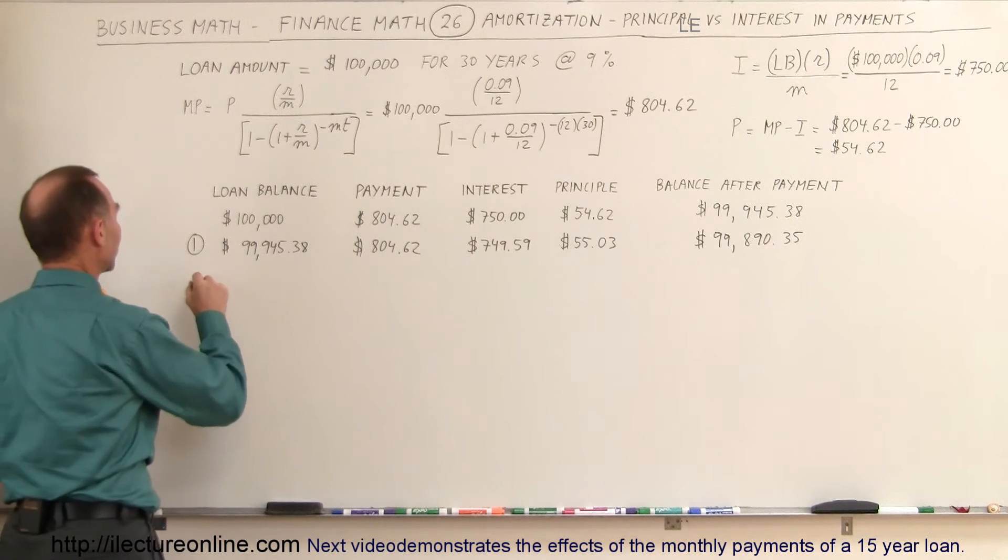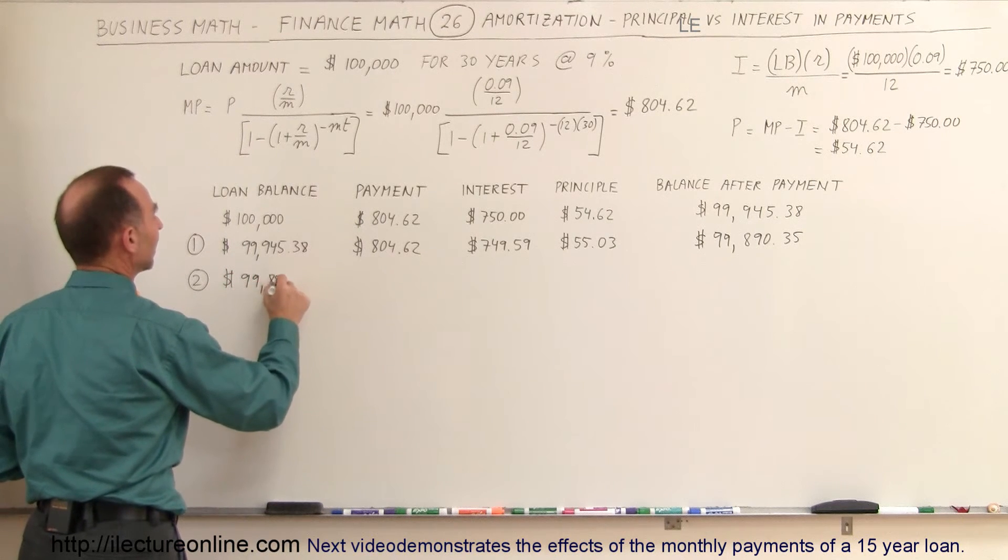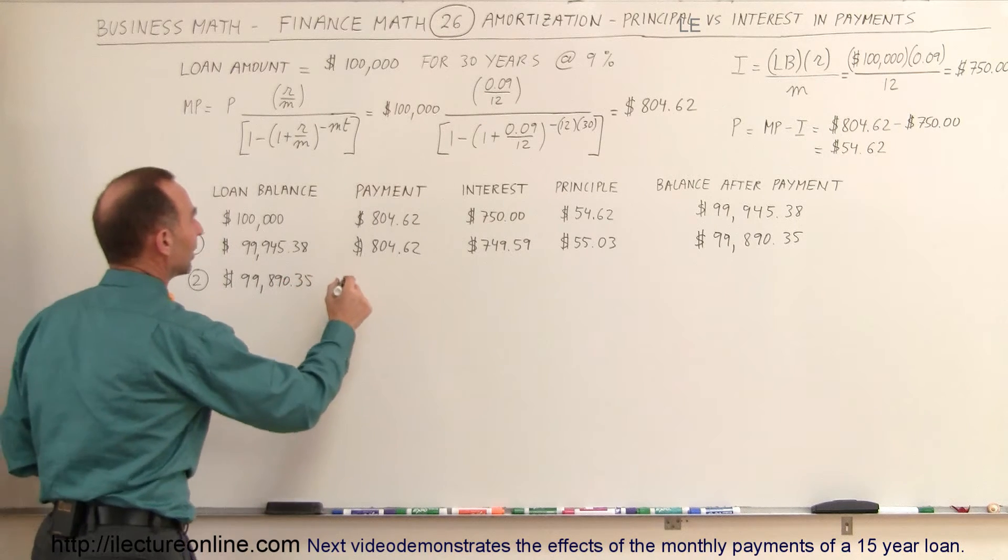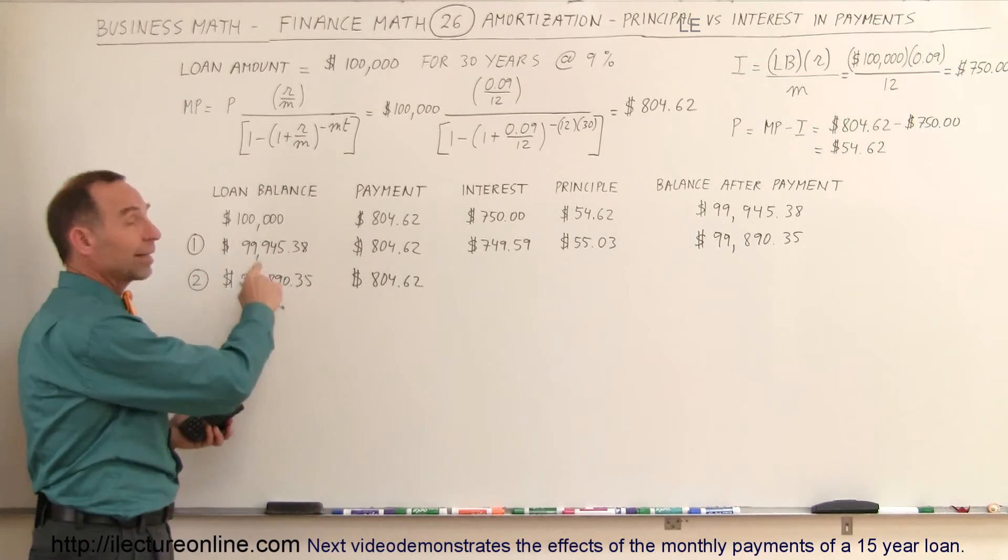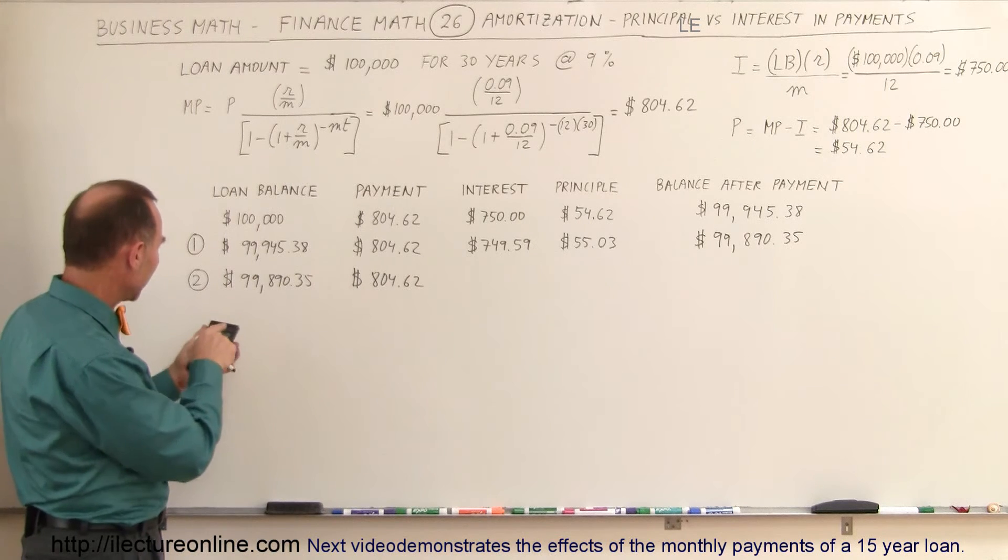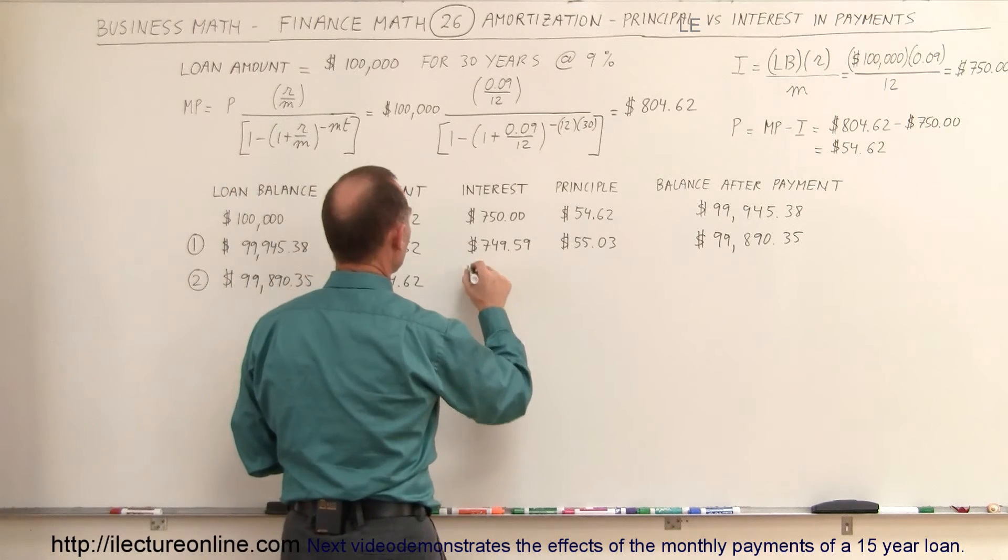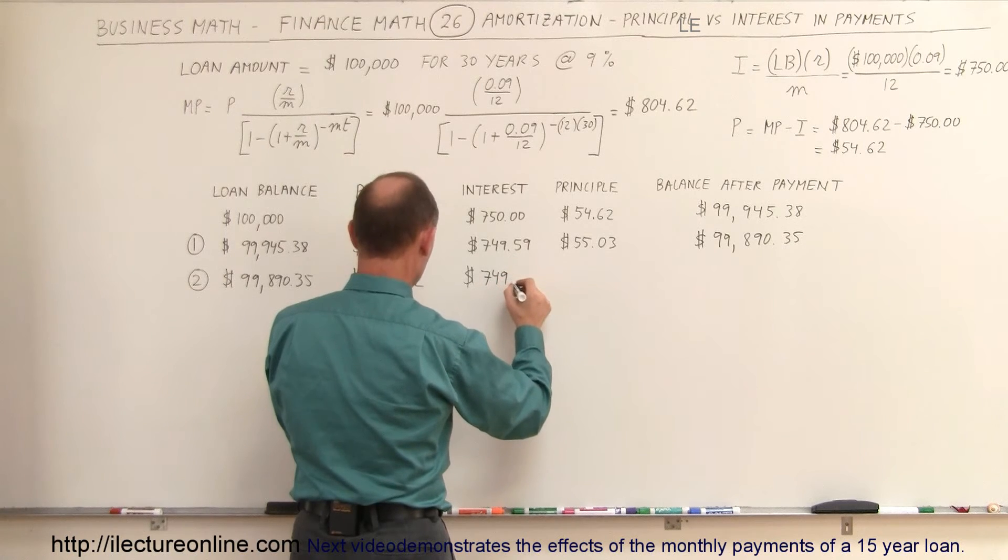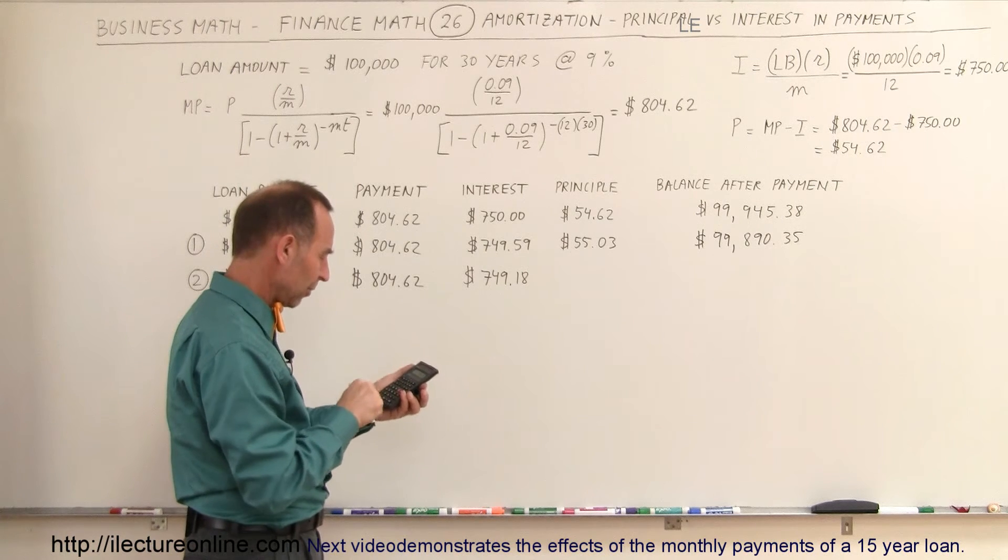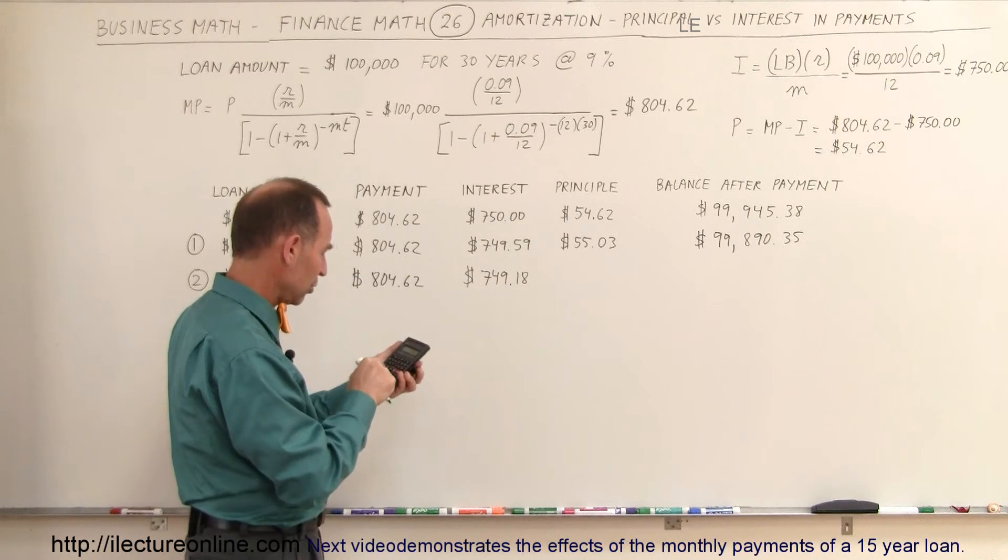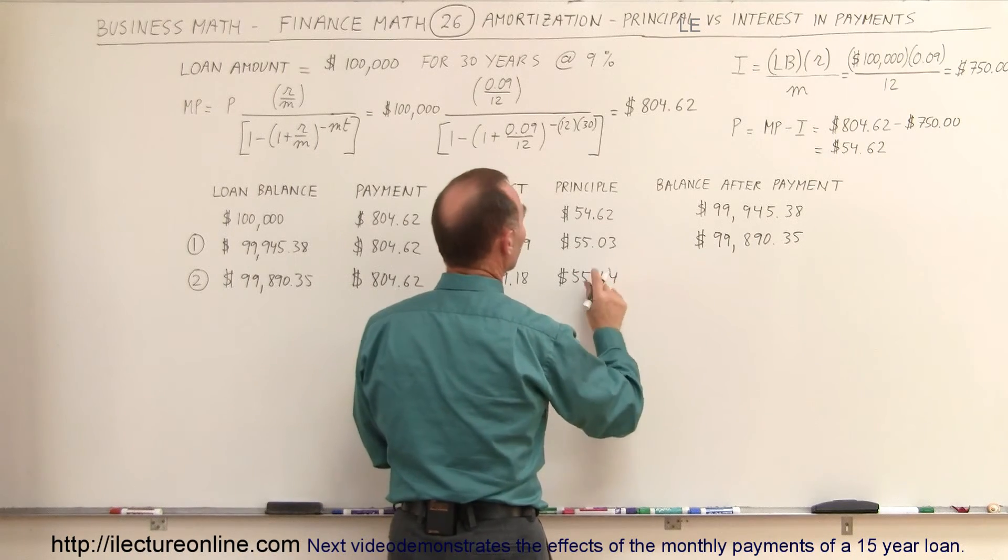Let's go one more month. So after three months, after making two payments, the loan balance now is $99,890.35. Again, we make a third payment now of $804.62. We take the loan balance, multiply times the rate, divided by 12. So we take this one, so times 0.09 divided by 12 equals, so now the interest payment will be $749.18. So $749.18, subtract that from $804.62. And notice now, of that payment, $55.44 will go to principal.